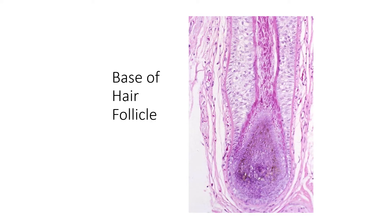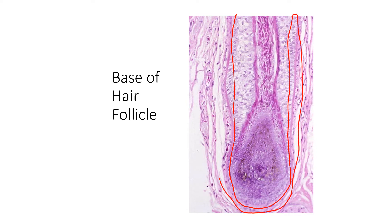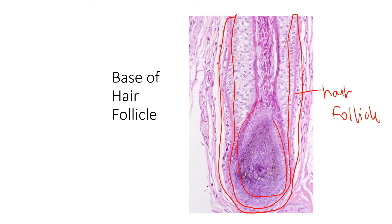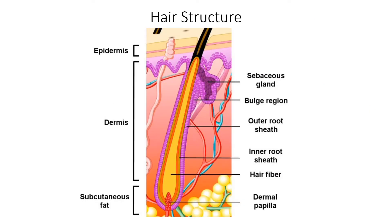Looking at the image, stratum basale — which is the hair follicle — gives rise to the hair root. This bulb-shaped ending down here is the hair root. If you damage the hair follicle, the hair root can no longer grow. However, if the hair root is damaged, your hairs can regrow back as long as that follicle is still intact. In this image, the purple area, which is stratum basale, travels all the way down around the bottom of the hair — that is the hair follicle closest to the hair root.